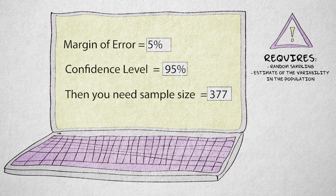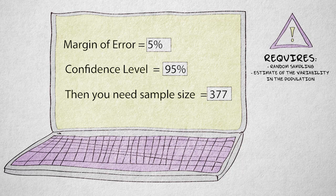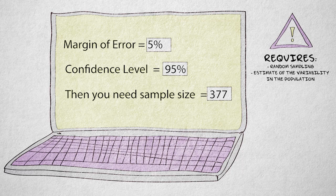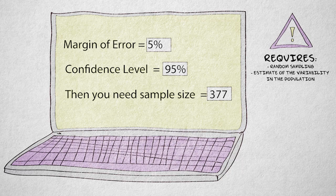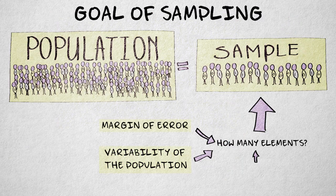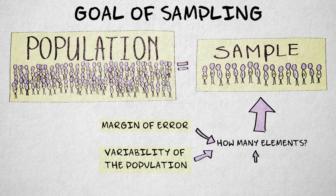This does require that we use random sampling, and that we can estimate the variability in the population, for example based on previous studies, old census data, or just a best guess if necessary. I'll just mention one other important factor to consider when determining the sample size.